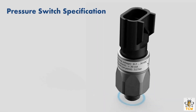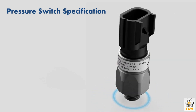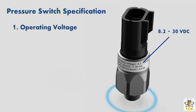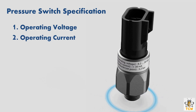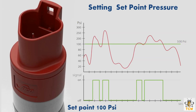In order to function properly, there are several specifications to consider on a pressure switch. The first is the operating voltage — match the type and value of the voltage on the pressure switch with the voltage used on the cable. The second is the operating current — make sure the operating current specification can handle the current flowing in the cable. The third is set point pressure, which is the pressure at which the pressure switch will be activated. In most pressure switches, the set point pressure can be slightly adjusted within a certain range using a screw inside the pressure switch.